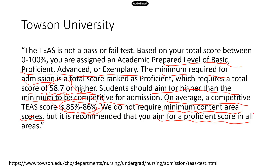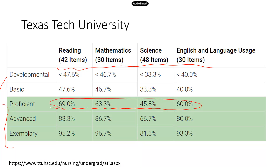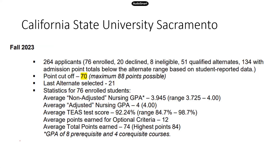Here's an example for Texas Tech University. They have a table on their website showing the different score levels for different content areas — proficient, advanced, and the highest level. Similar to Towson, the green levels indicate you need to reach proficient for all four content areas. For California State University, they have a lot of good data on their website: the point cutoff ranges from 70 to a maximum of 88 points, so you need at least 70 to apply for the program.